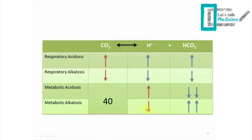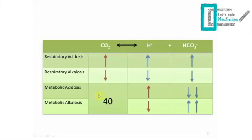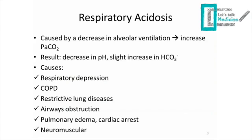In metabolic alkalosis, we have a decrease in hydrogen ions, and as a result the equation moves to the right, giving us more bicarbonate — and as stated, in metabolic pathologies this change is significant. The number 40 represents the normal level of CO2 in our body. When it comes to metabolic acidosis or alkalosis, the CO2 level will tell us if there is respiratory compensation or not.